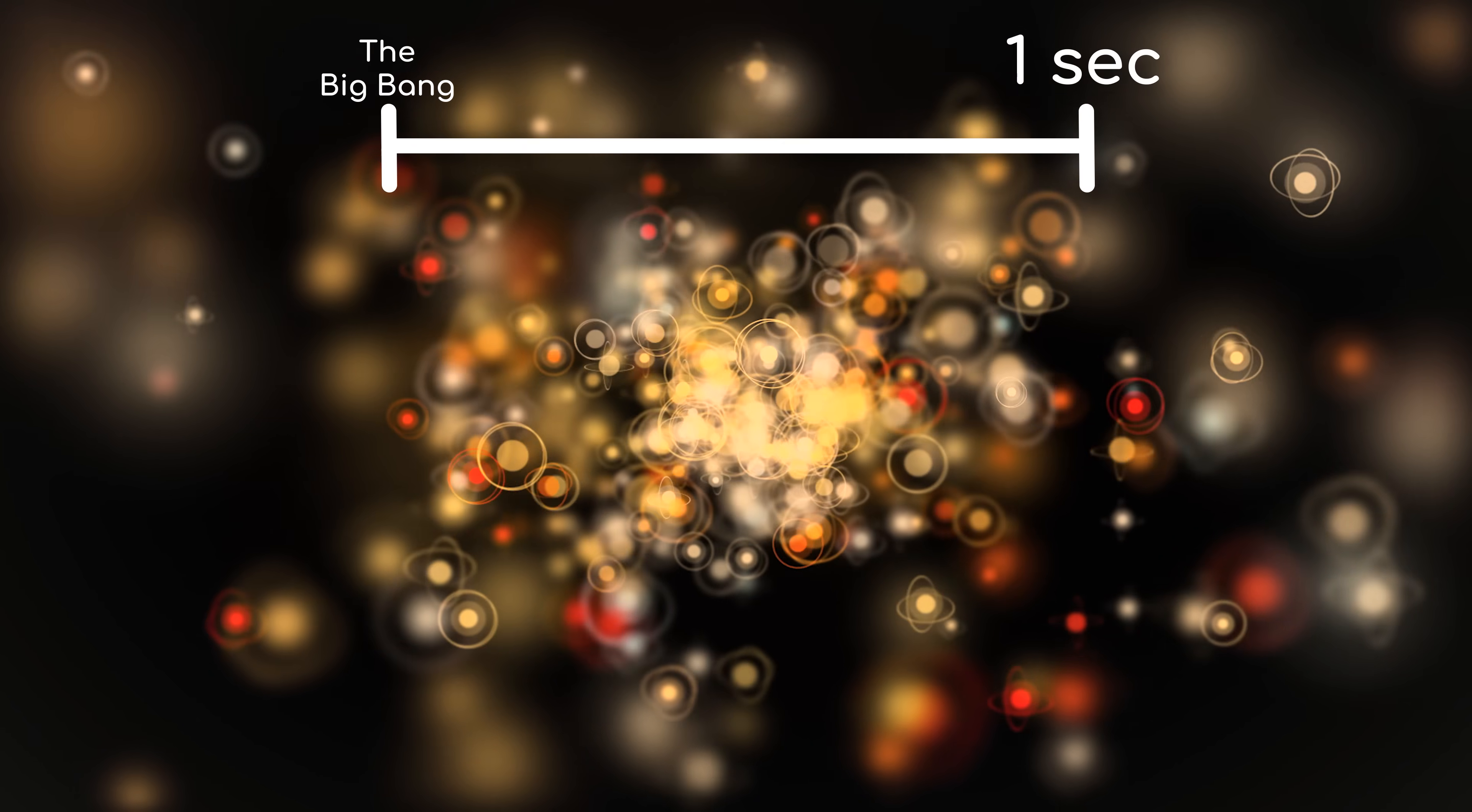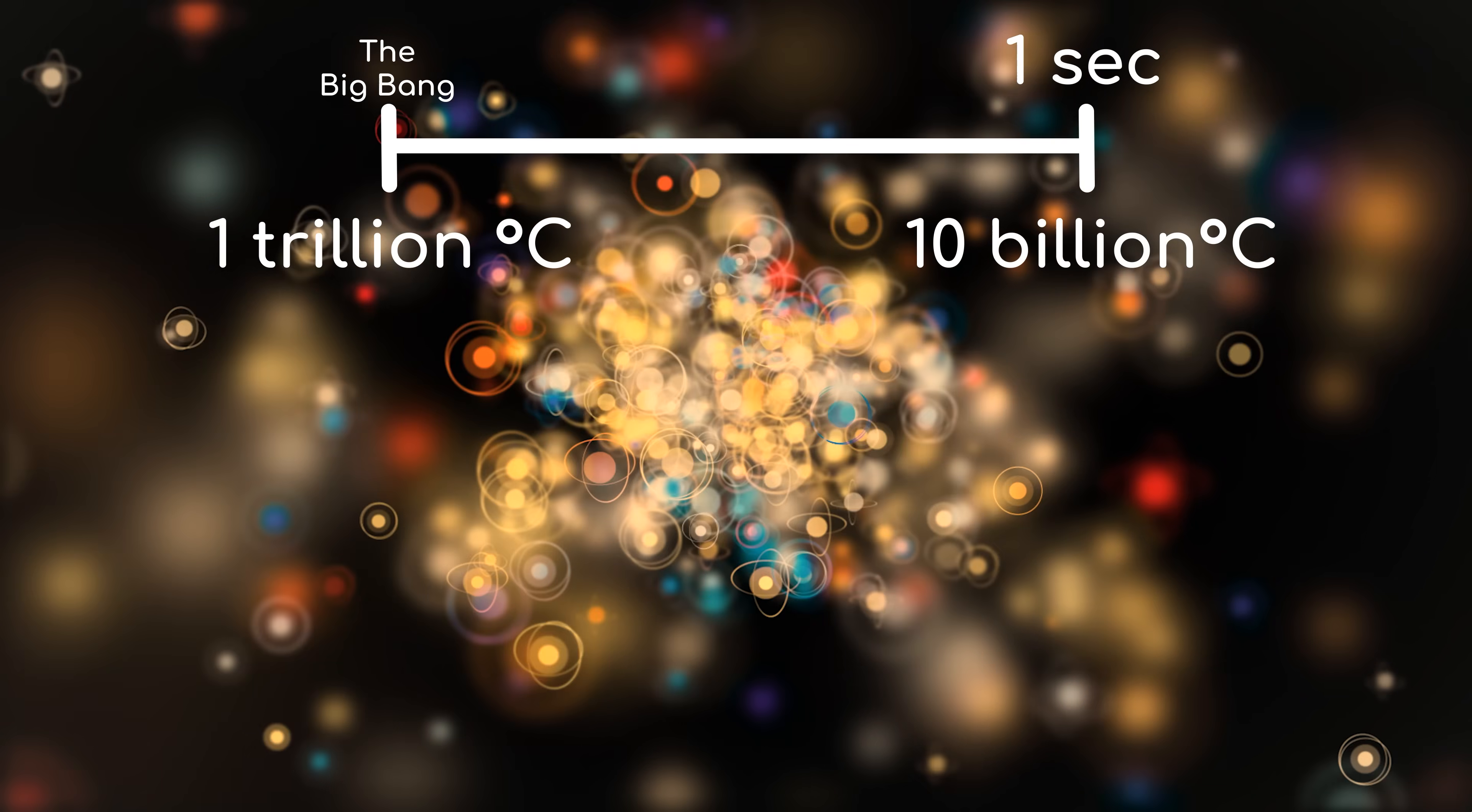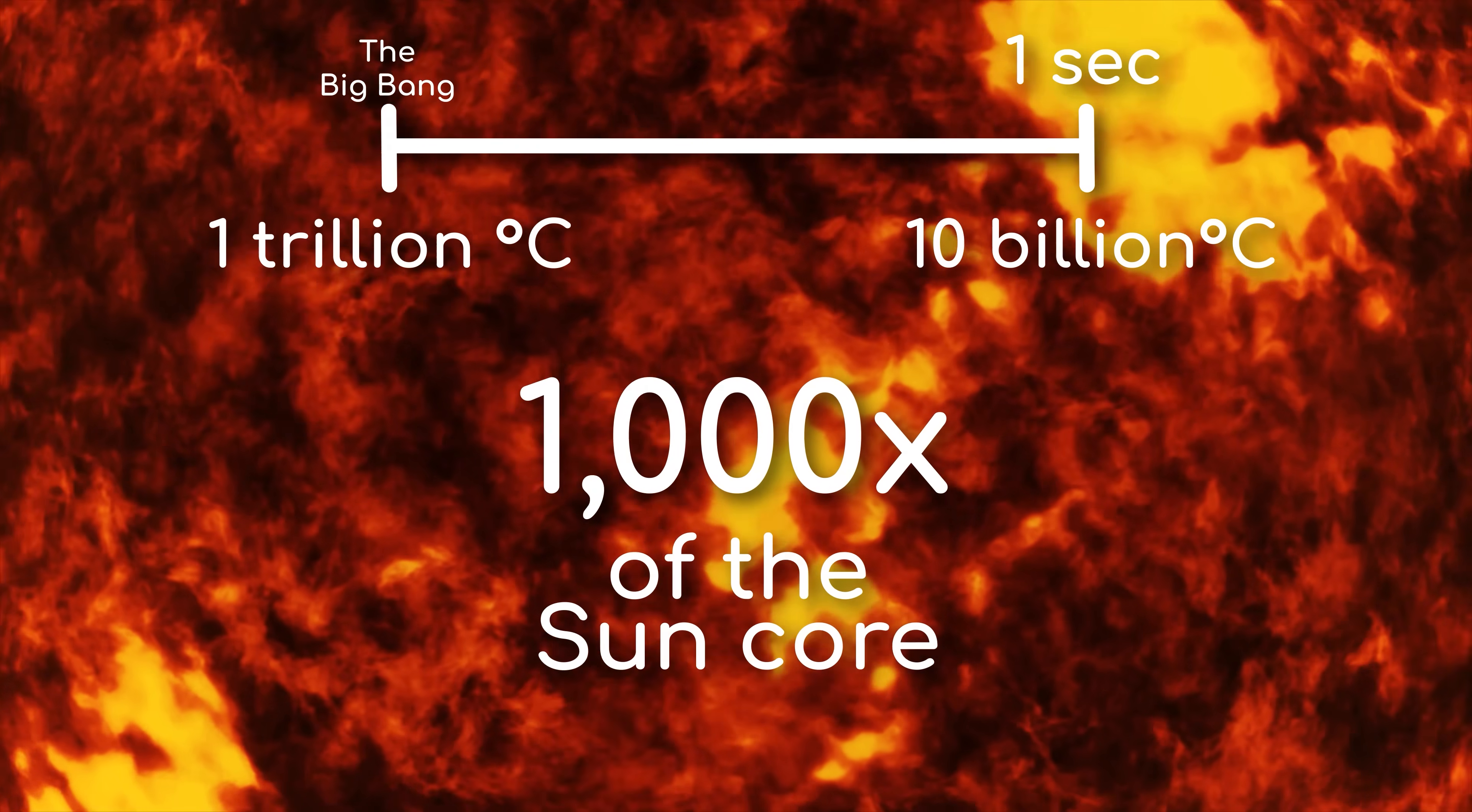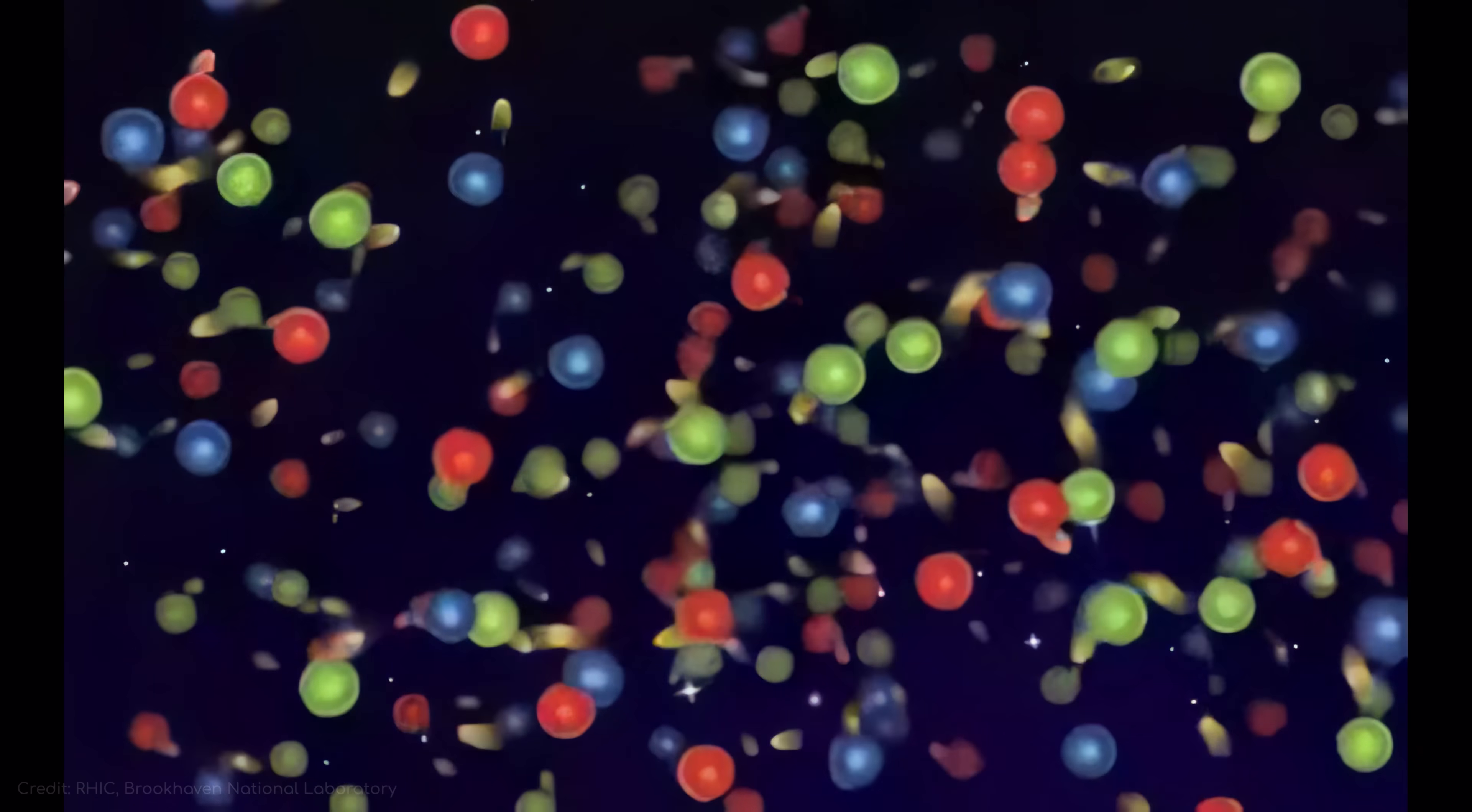One second after the universe's expansion began, the temperature of the universe dropped down to a mere 10 billion degrees Celsius. Which is actually only 1000 times the temperature at the centre of our Sun. This was still hot enough that matter couldn't form yet. The fundamental force that holds together the nuclei of atoms would have been overwhelmed by this intense energy.